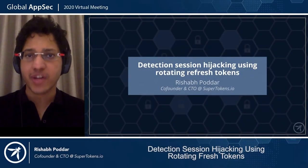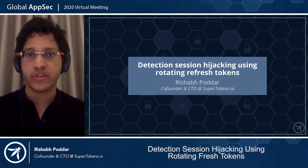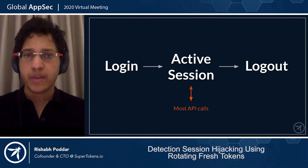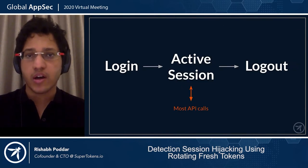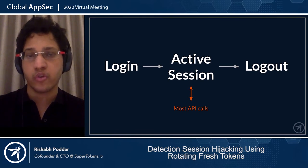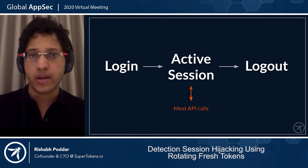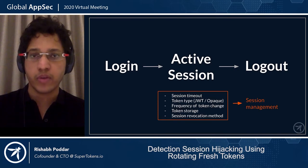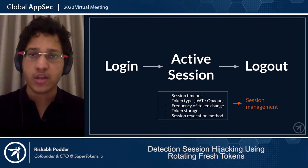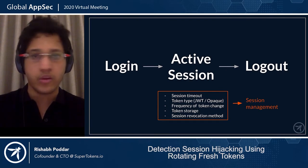Hi, my name is Rishabh and today I'll be talking about how we can detect session hijacking using rotating refresh tokens. Before I begin, I would like to clarify the terminology I'll be using. A session is essentially the period of time after login but before logout. Session tokens are used by most APIs to identify the user who logged in, and session management is everything to do with how the session behaves — what the session inactivity timeout is, what kind of tokens are being used, how these tokens are stored, and how they're revoked.